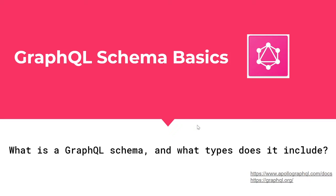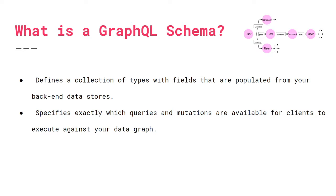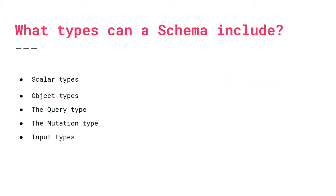Today we're going to be talking about the basics of a GraphQL schema. So what is it exactly? Really it's just a collection of types with fields that are populated from your backend data stores. We know that GraphQL is a data querying language for APIs, so defining a schema is really just defining a blueprint in which you have a bunch of types and queries and mutations that the client can make to access data from your backend data stores.